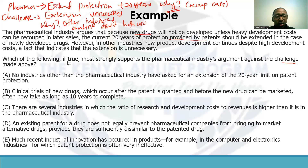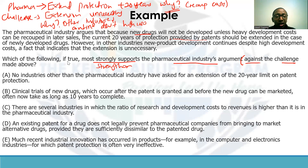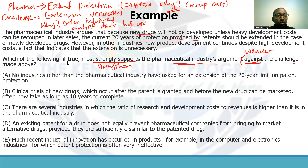'Which of the following if true most strongly supports' is a marker for strengthening the argument. What are we strengthening? The pharmaceutical industry's argument. But here's the caveat: 'against the challenge made above.' So whatever answer you pick should strengthen the pharmaceutical industry's view and weaken this challenge. Read the question carefully — missing the second part would be critical. This is an example of a question that has both strengthening and weakening in the same question.